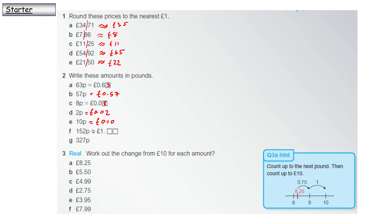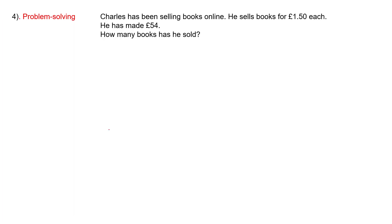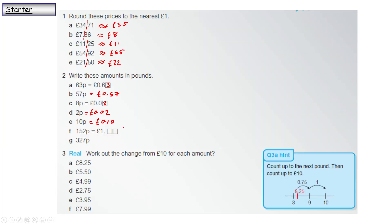152 pence is £1.52. 327 pence is going to be £3.27.